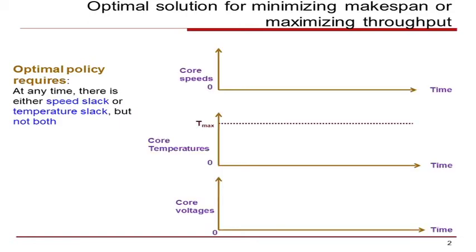Consider an example with initial core temperature below the maximum. According to the optimal policy, the core speed is set to the maximum as there is a slack in core temperature.